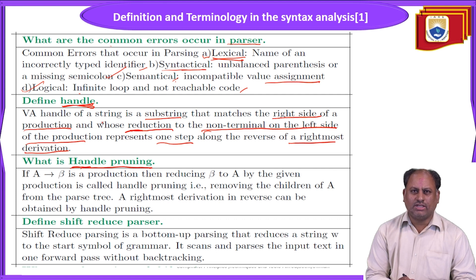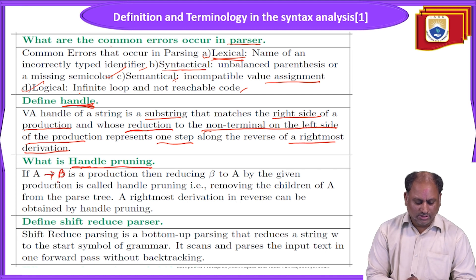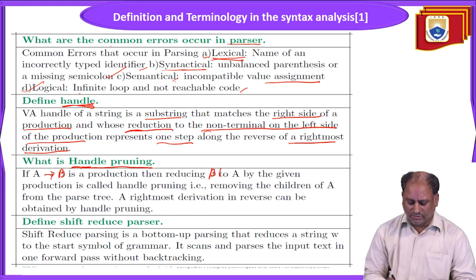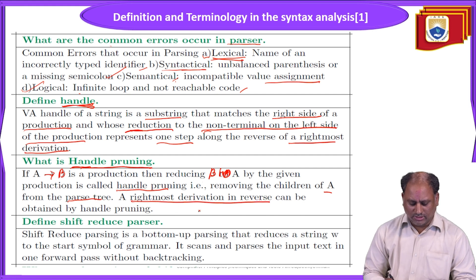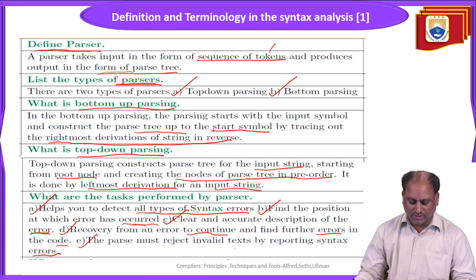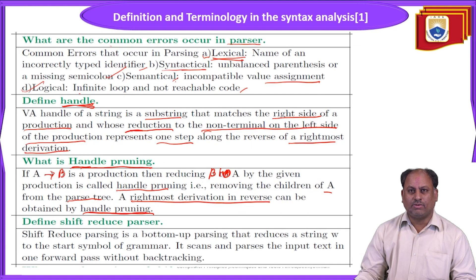What is handle pruning? Previously we detect a handle — meaning the derivation is suitable to replace that substring. The substitution is performed using handle pruning. If A derives beta as a production, then beta reduces back to A. That means: if A derives to beta and beta reduces to A, then the production is called handle pruning — that is, removing the children of A from the parse tree. Rightmost derivation in reverse can be done using handle pruning.